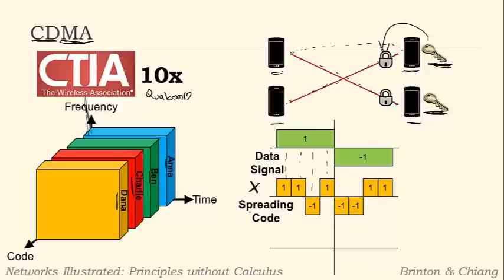When we multiply these out, the first one, this is just 1 times 1, which is going to give us a 1. Then we have 1 times 1 again, which gives us 1. Then 1 times negative 1, which gives us negative 1. Then 1 times 1 again, which gives us 1. Basically, on the first end right here, we're just going to get the spreading code back. We're transmitting the spreading code, because this data signal is a 1, and 1 times anything is just whatever the other number is.